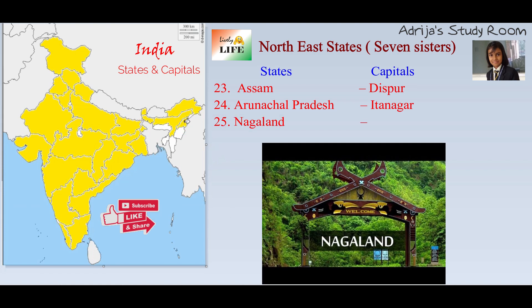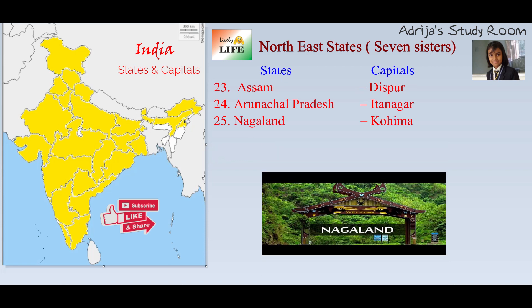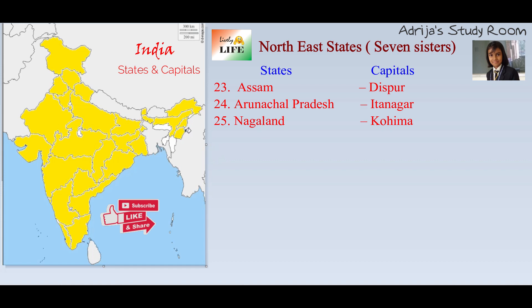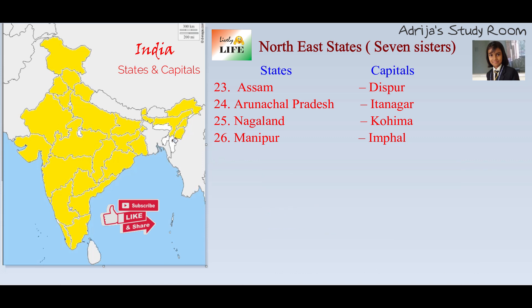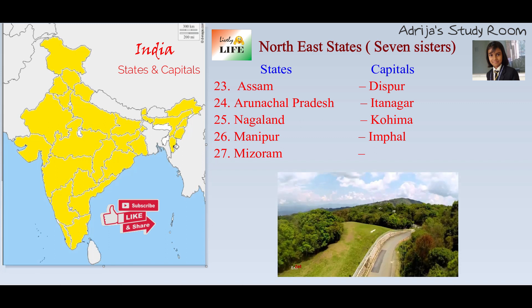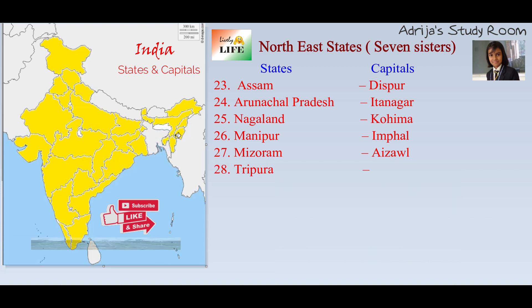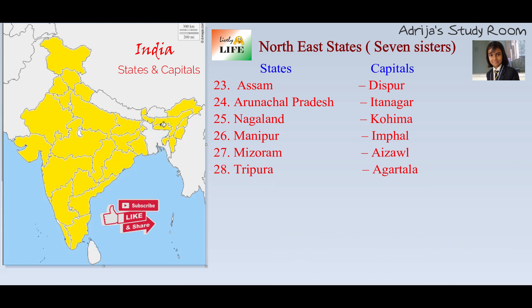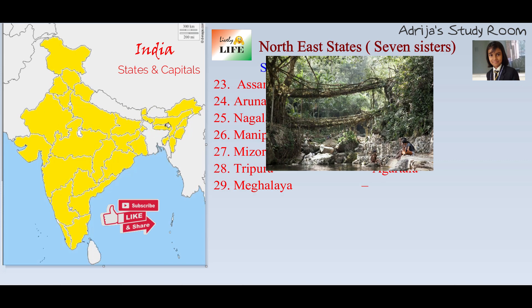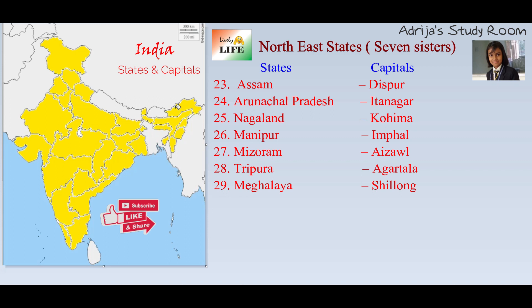This state is Nagaland, and its capital is Kohima. This state is Manipur, and its capital is Imphal. This state is Mizoram, and its capital is Aizawl. This state is Tripura, and its capital is Agartala. And this state is Meghalaya, and its capital is Shillong. Assam, Arunachal Pradesh, Nagaland, Manipur, Mizoram, Tripura, and Meghalaya are known as the Seven Sisters.